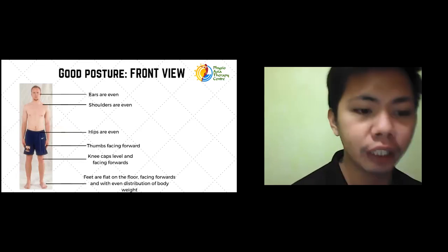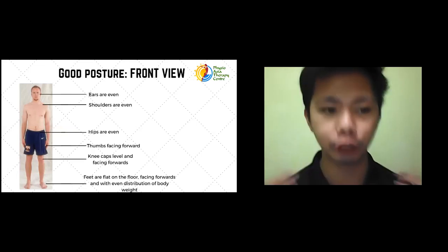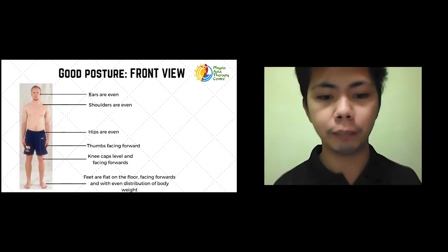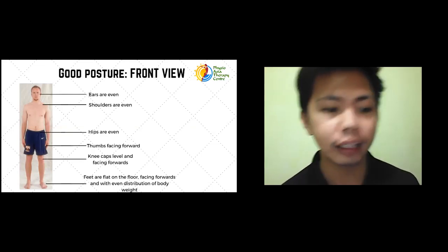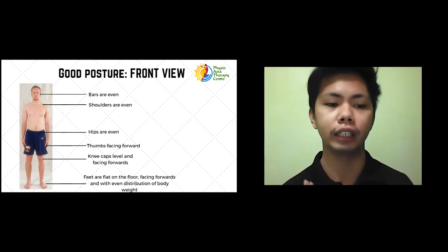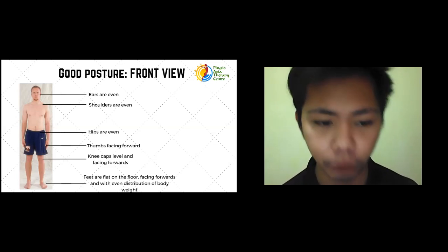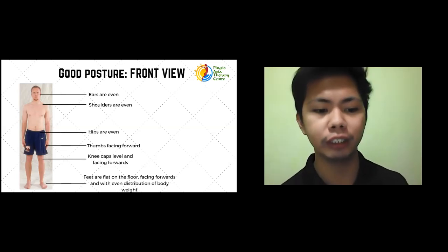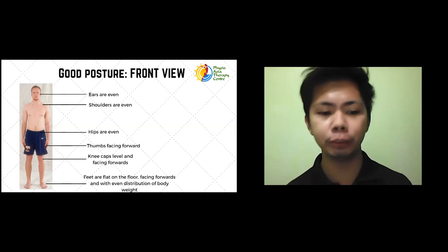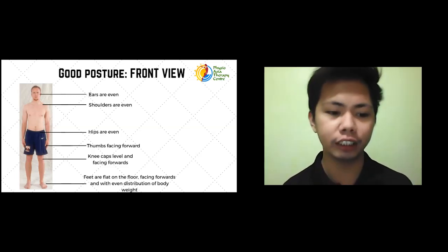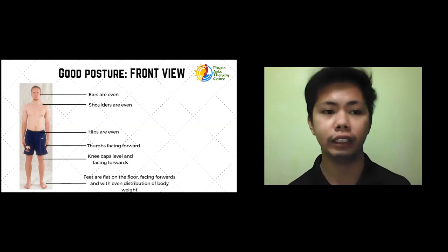The thumbs should be facing forward — they should not face across the thigh or toward each other. When your thumbs are facing forward, this signifies that your shoulders are in a neutral position. Next, kneecaps should be level and facing forward; they should not touch each other or go outward. Lastly, the feet should be flat on the floor, facing forward, and body weight should be distributed evenly. You should not put more weight on one foot. The weight should be focused on the ball of the feet.